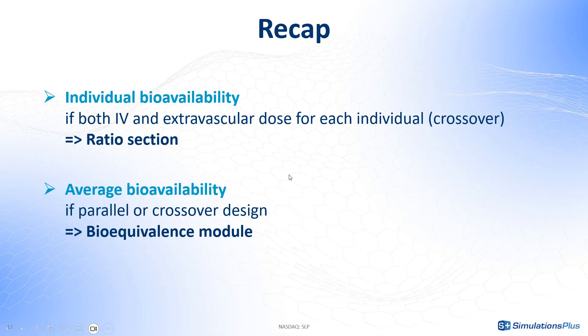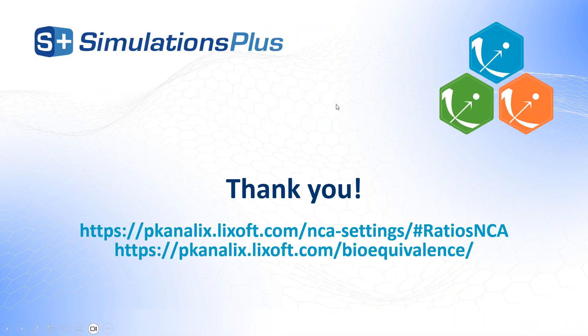So as a short recap: to calculate individual bioavailabilities when you have both IV and extravascular doses for each individual, use the ratio section. To calculate an average bioavailability — in particular for parallel designs but also crossover designs — you can use the bioequivalence module. Have a nice week! I'll see you next week!